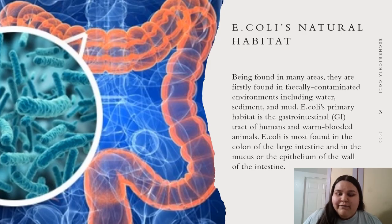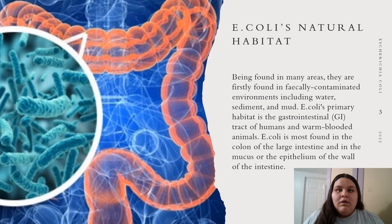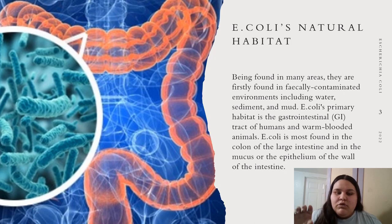While E. coli can be found in fecally contaminated environments including water, sediment, and mud, its primary habitat is in the gastrointestinal tract, or the GI tract, of humans and warm-blooded animals. Here to the left you can see a picture of the gastrointestinal tract, or the intestines, and a little zoom-in on the inside where you can find E. coli.